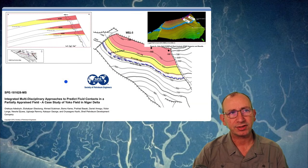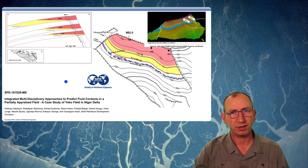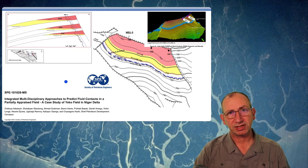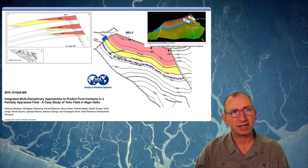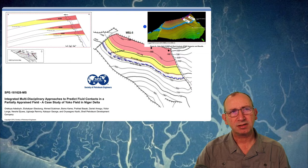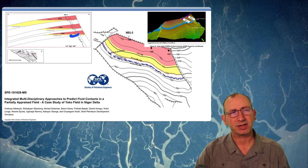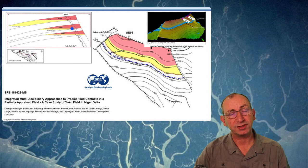The second case study is the Yoko field. Shell have published a set of nice SPE papers on the fields. In this paper they go through four different methodologies for trying to reduce uncertainty on the observed hydrocarbon-water contacts — they use proprietary tools, reservoir simulation ideas, and a quantitative interpretation or 3D modeling approach. It's a great piece of work in that we've got a contour map we can read and count, and a cross section and stratigraphic template. They've also shown the observed hydrocarbon-water contacts. We took this and ran it through fault risk to see how we go.